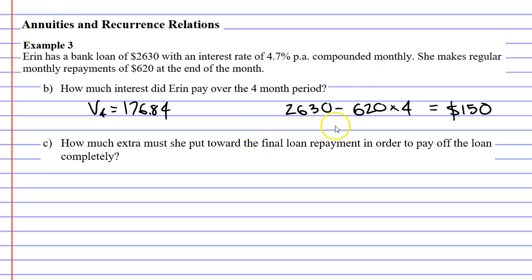$2,630 minus our repayment of $620 performed four times takes us down to $150. What does this $150 mean? Well, if Erin was not charged interest, this is how much she would have owed the bank after the four months. But instead, after four months, she owed this amount, which is slightly more than $150. And that is because she's been paying interest. So the difference between these two amounts is the interest. Let's write I for interest: $176.84 minus $150 comes out to $26.84 in interest that she paid over the period of four months.